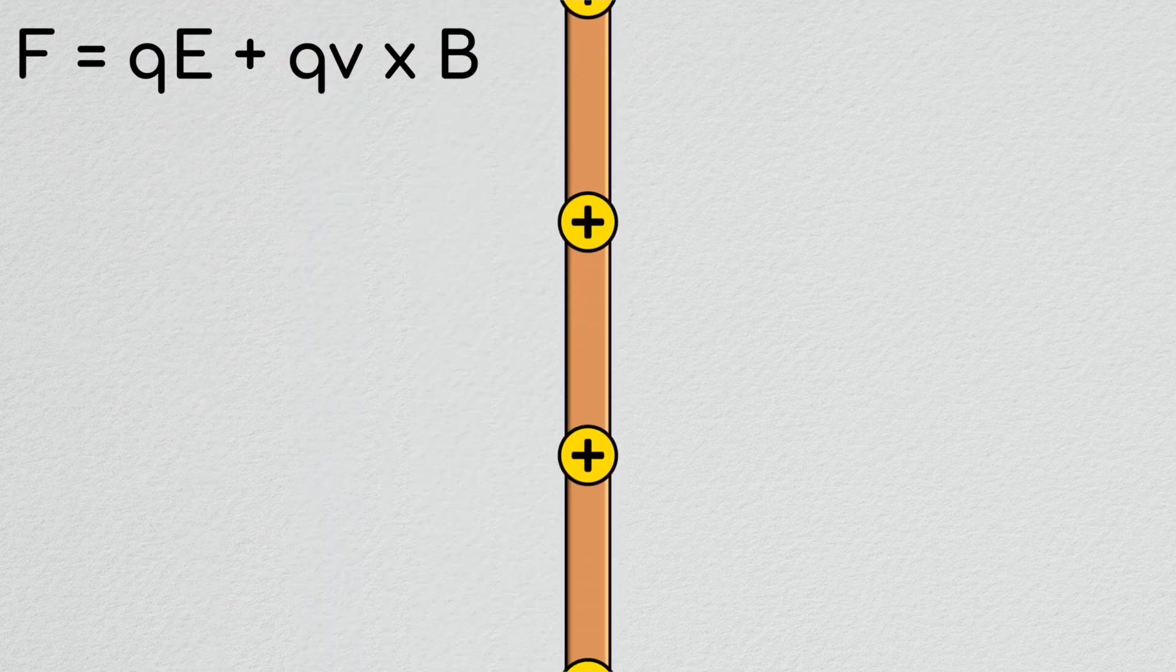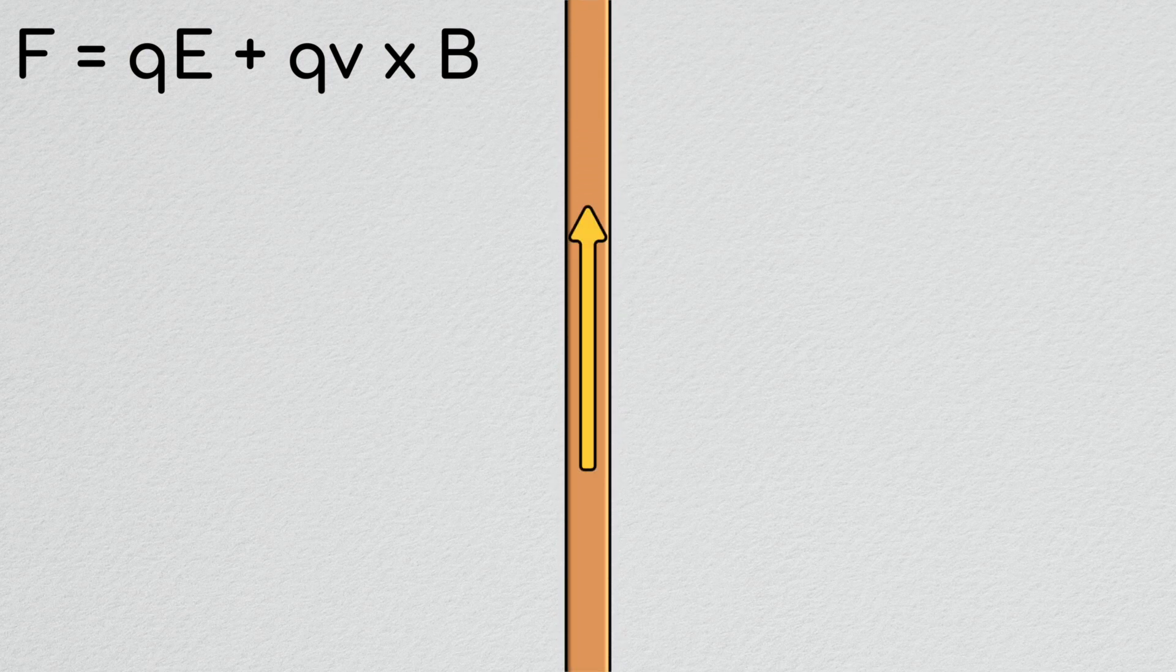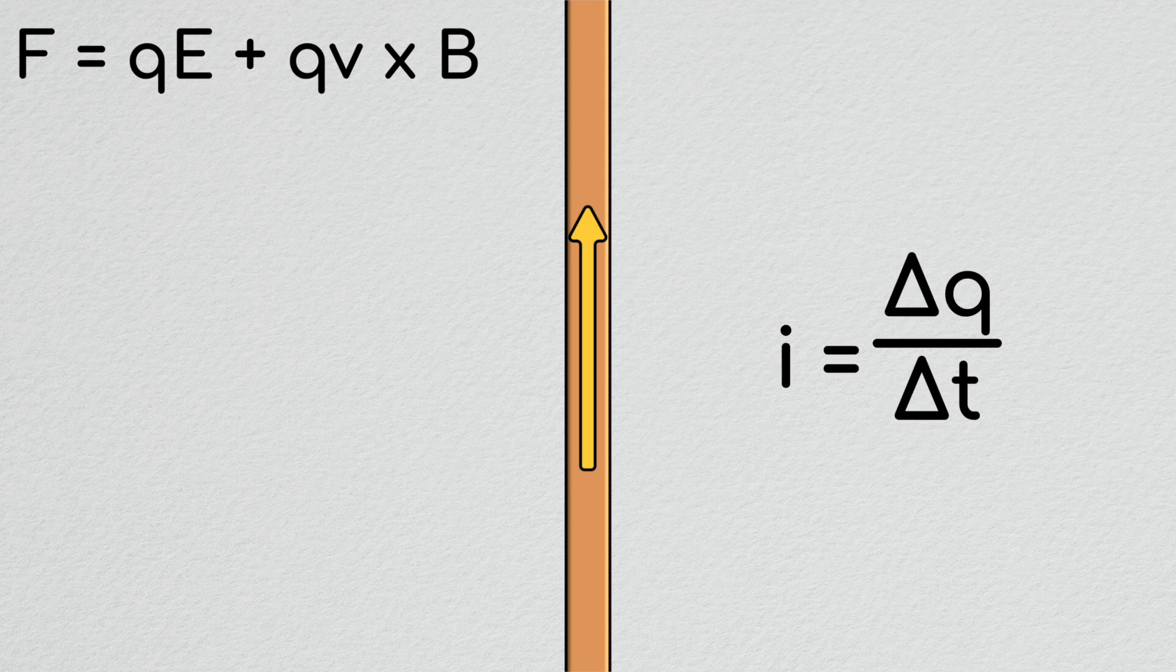When charged particles move through a conductive material driven by some electric field we call this a current. Current is measured in amperes or amps for short and it's essentially the count of the number of charges moving through a cross section of the material per second.